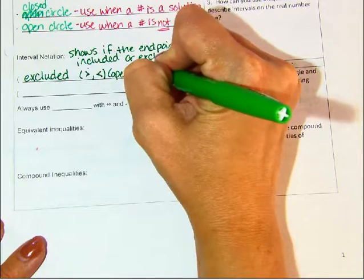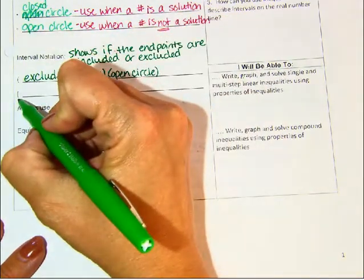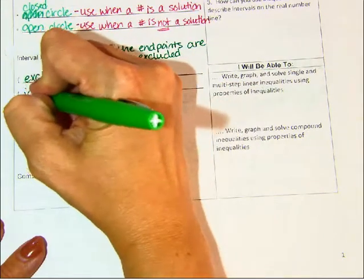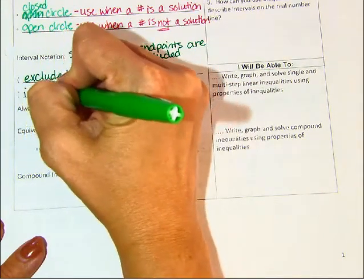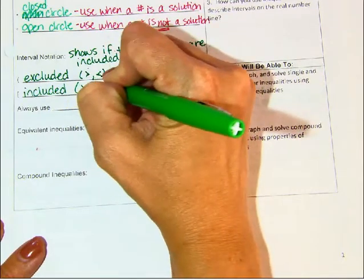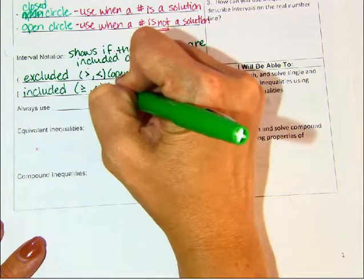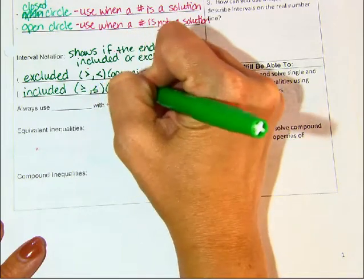Open circle means you're going to use the parenthesis. Now we have this bracket if it is included. So we'll use it if we have greater than or equal to or less than or equal to. Because those are the closed circles, the filled in circles, because those are included in the solution.